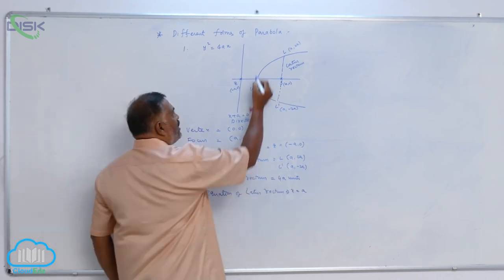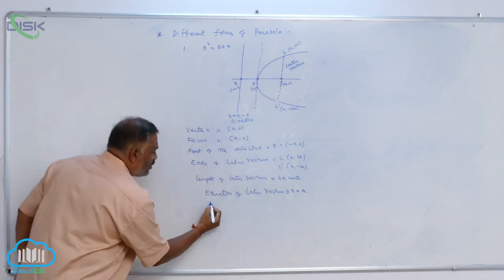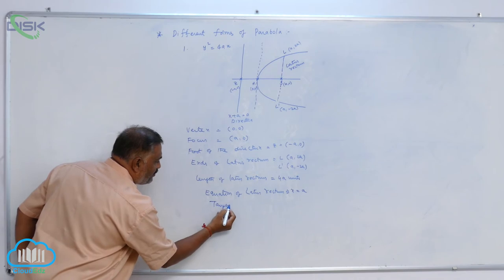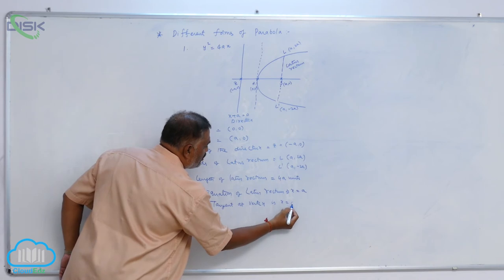We will define one more, that is equation of tangent at the vertex. So tangent at the vertex is x is equal to zero.